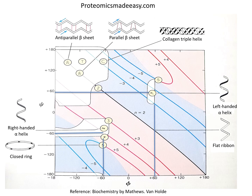This plot illustrates the positions of various regular secondary structures such as anti-parallel beta sheet, parallel beta sheet, collagen triple helix, closed ring, and flat ribbon. Note that conformations with a given number of residues per turn — such as 2, 3, 4, 5 — lie on one of the sets of lines drawn across the map. The lines corresponding to the flat ribbon (n equals 2) and points corresponding to the closed ring (n equals 5) are particularly important because as these are passed, the handedness of the helix changes.